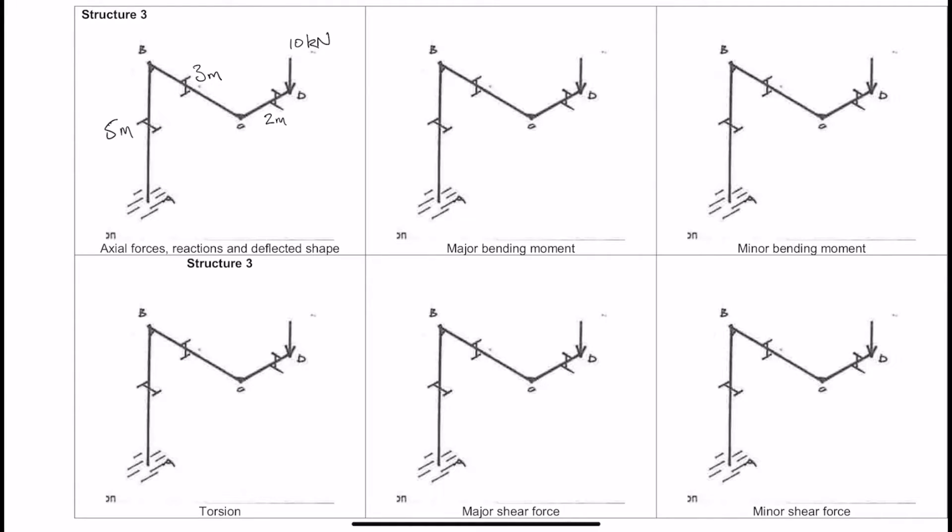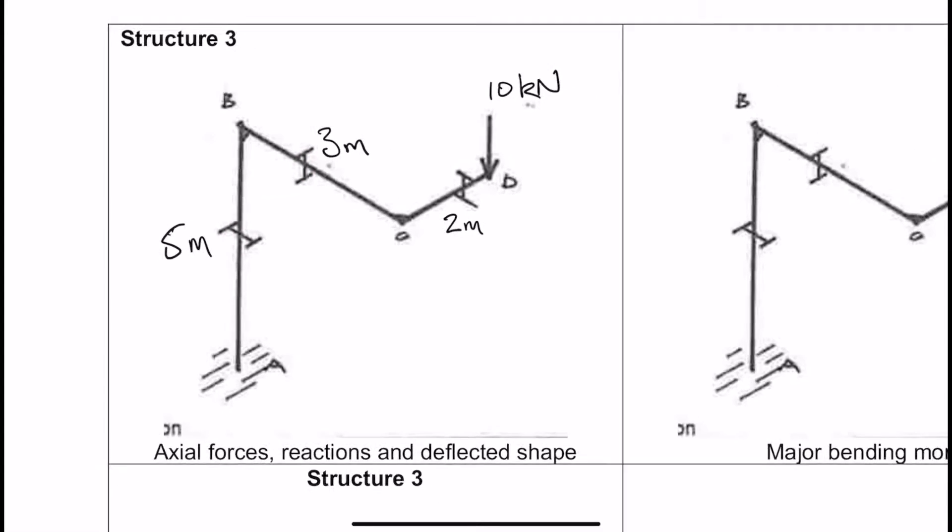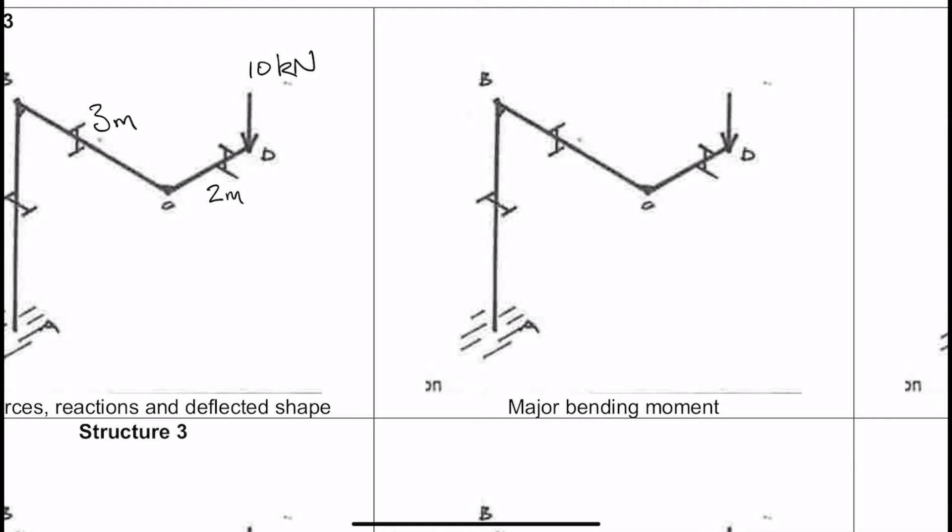So what is the predominant action, the predominant behavior of the structure? We only have one applied force, and bear in mind the orientation of the I-beams and the column, the H section. So the predominant behavior will come from this concentrated force onto member CD. And due to the fact that it's coming vertically, and that's the direction of the beam there, it's a major axis bending moment.